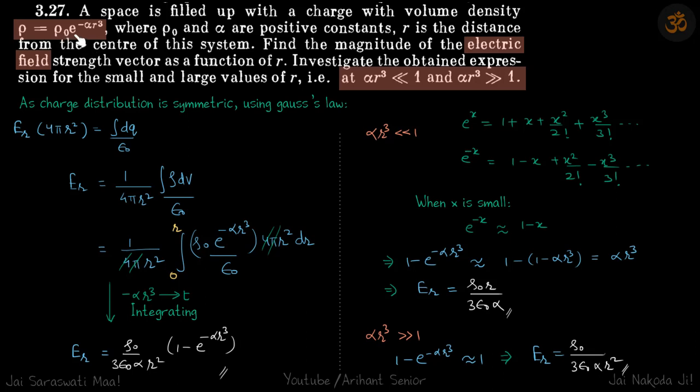We are given a symmetric charge distribution in space as a function of r. We need to find the electric field at any distance r. Because it's symmetric, we use Gauss's law: electric field times surface area equals integral dq by epsilon naught. The integral dq is ρ dV, where dV is 4πr² dr. By integrating, we get our answer. In the second part, we need to find the field when αr³ is much less than or much greater than one.